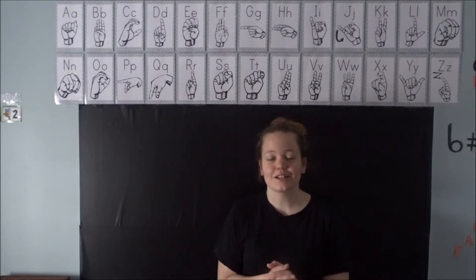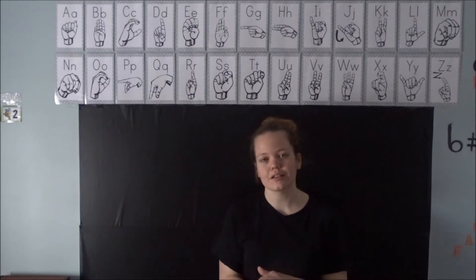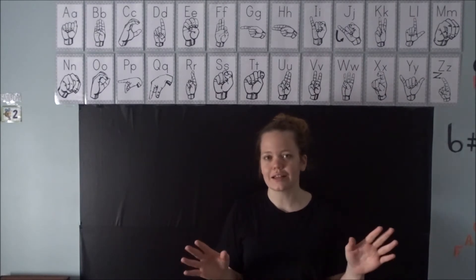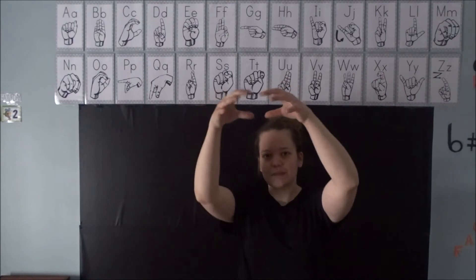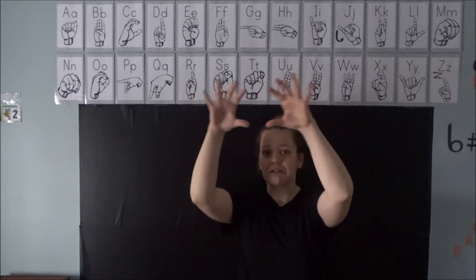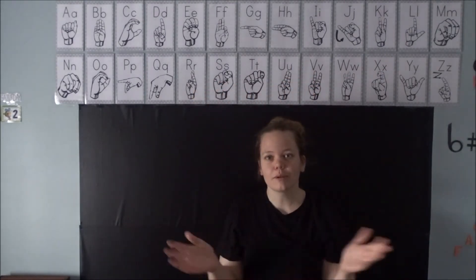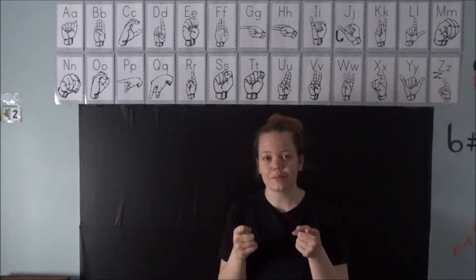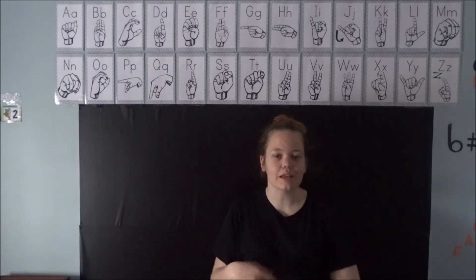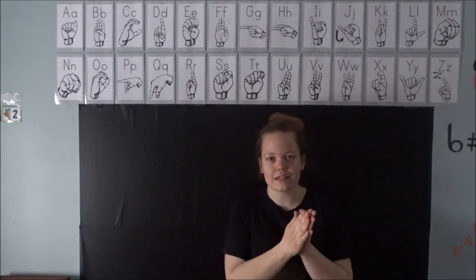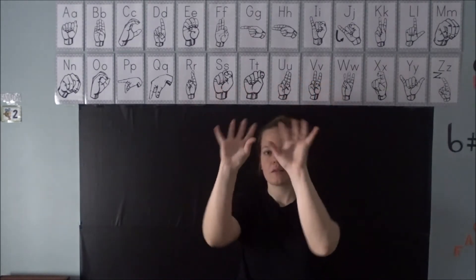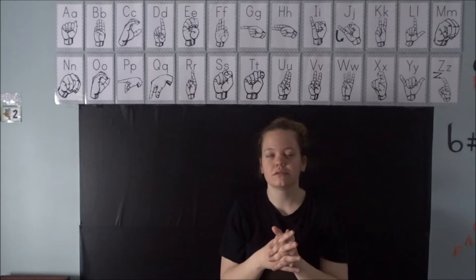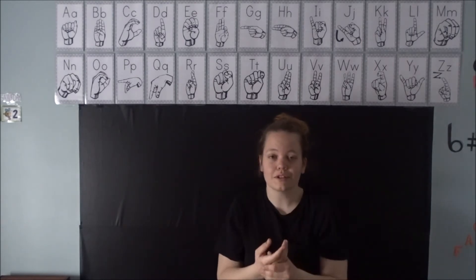The next sign is the sign for clouds. Clouds is kind of interesting because there are a whole bunch of different ways to sign it, because you are more or less just making the shape of the cloud. If you know a different way to sign it, please share it with me. But this is the way that I have seen it signed most often — you are literally just making the shape of the cloud and you point to it.